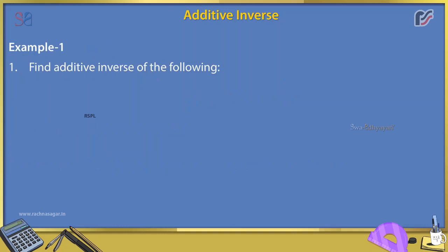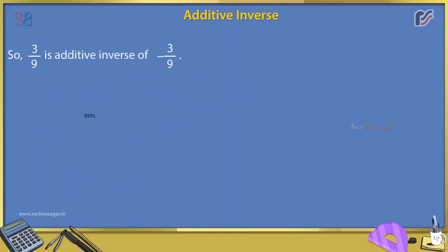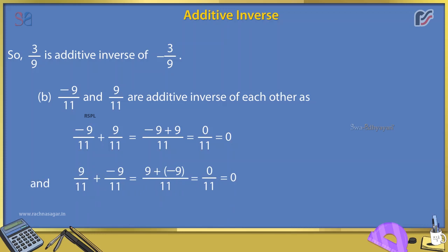Example: Find the additive inverse of the following. A. -3/9: Since -3/9 + 3/9 = 0 and 3/9 + (-3/9) = 0, so 3/9 is the additive inverse of -3/9. B. -9/11 and 9/11 are additive inverses of each other, as -9/11 + 9/11 = (-9 + 9)/11 = 0/11 = 0, and 9/11 + (-9/11) = 0.